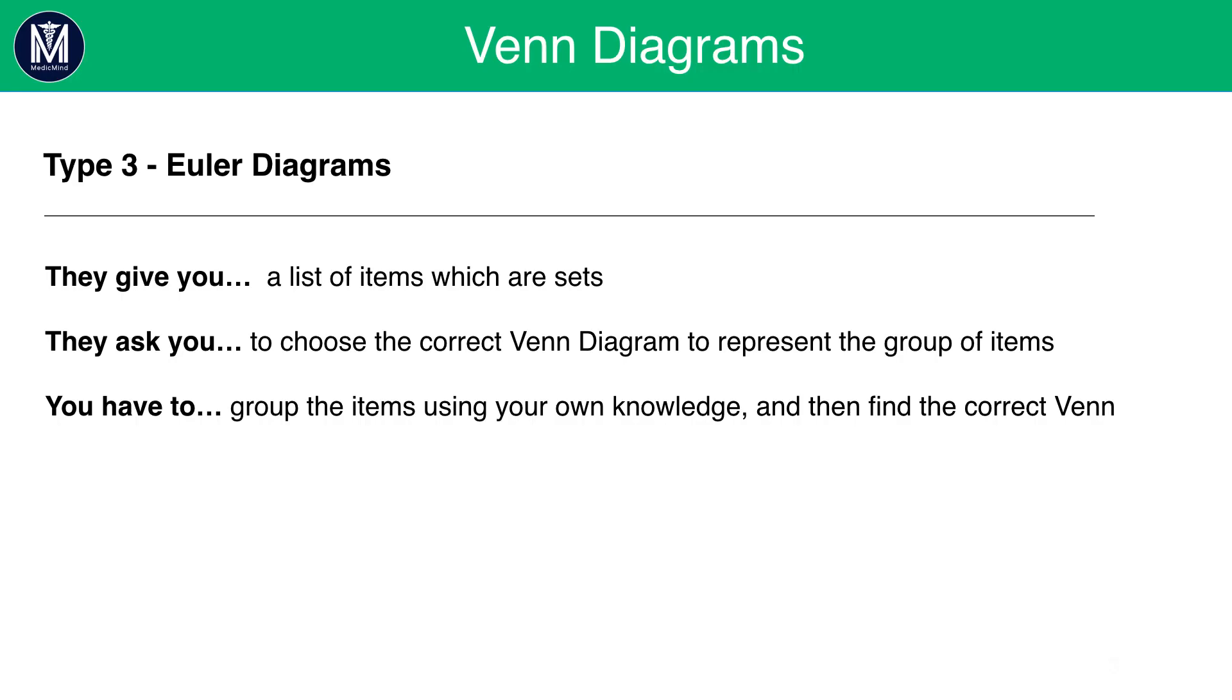In these questions, you'll be given a list of items in sets. You'll be asked to choose the correct Venn Diagram to represent the group of items. And you'll have to group the items using your own knowledge and then find the correct Venn.